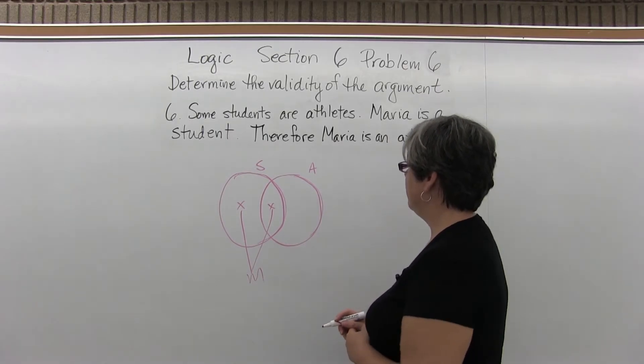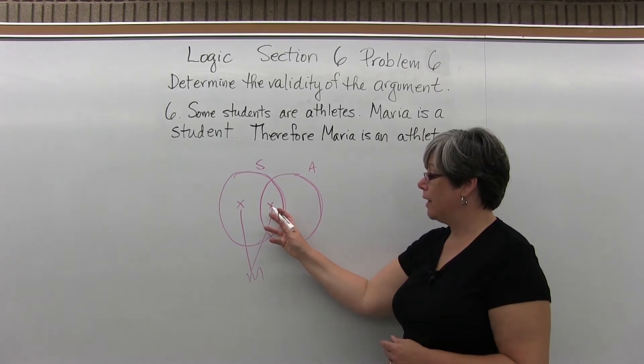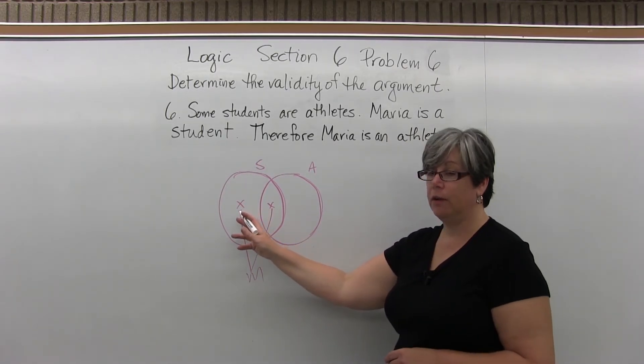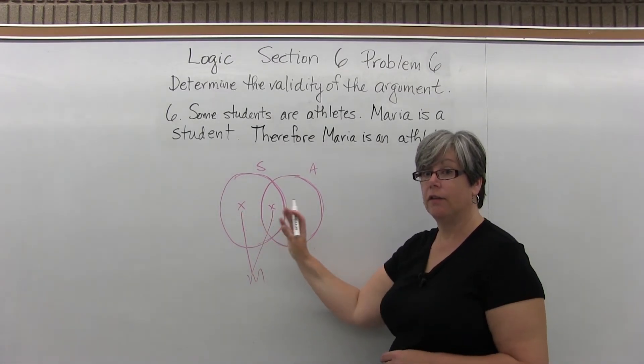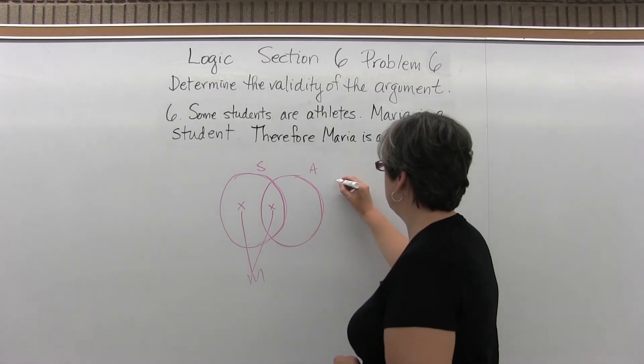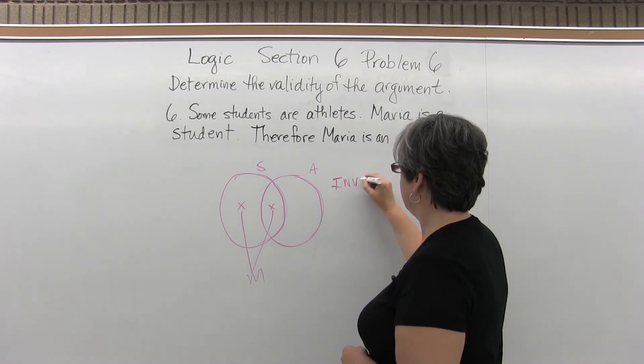Therefore Maria is an athlete. Maria could be an athlete, but she may be a student who is not an athlete. Therefore the argument is invalid.